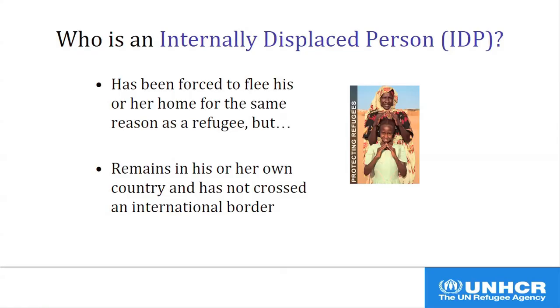Now let's talk briefly about people who are uprooted from their homes and have the same fears that refugees have, but for one reason or another haven't crossed an international border. These are what we call internally displaced persons, or IDPs. IDPs are still inside the borders of their home country, but are very much like refugees in other ways, and likewise need protection and assistance. Because IDPs are still in their home country, that country is responsible for ensuring their rights and protection under human rights obligations. However, governments aren't always able or willing to ensure this protection, so the international community, including UNHCR, often steps in to help.